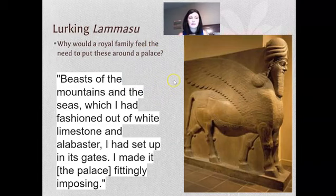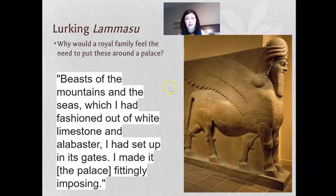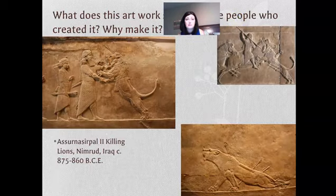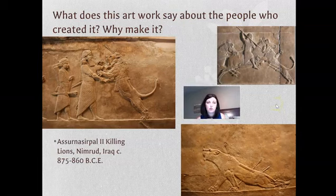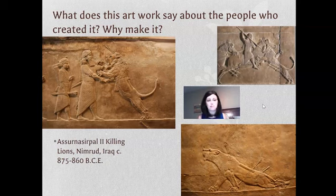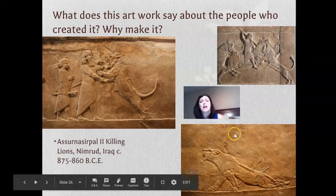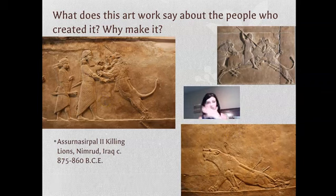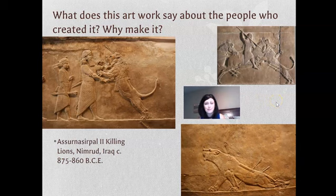As one inscription states: 'These are the beasts of the mountains and seas, which I had fashioned out of white limestone and alabaster, and I had set up in its gates — I made the palace imposing.' These lamassu wore the beard of the rulers to show they were not to be messed with. The Assyrian palace art also showed them killing bulls and lions, with the animals constantly in pain and agony — while the Assyrian figures themselves appeared perfectly calm, as if killing lions was effortless: 'We eat lions for lunch.'